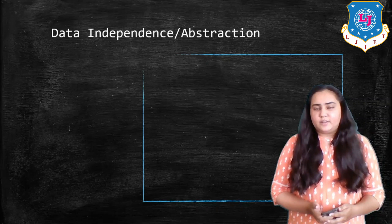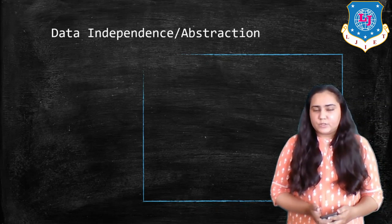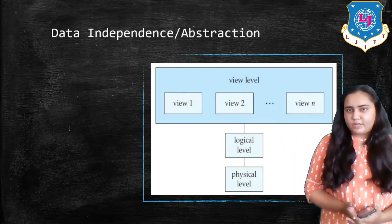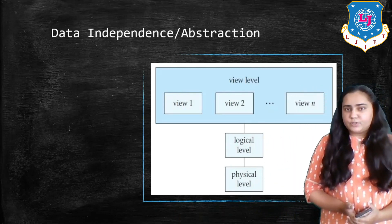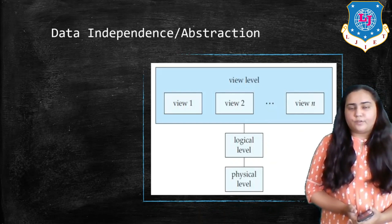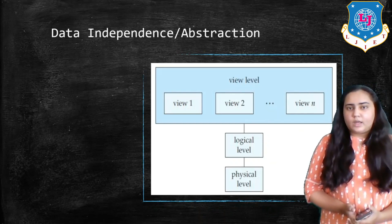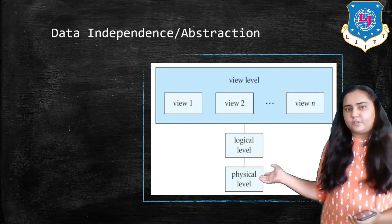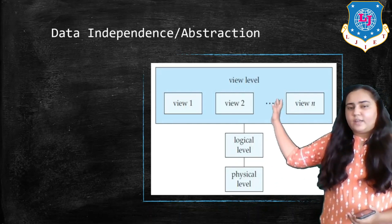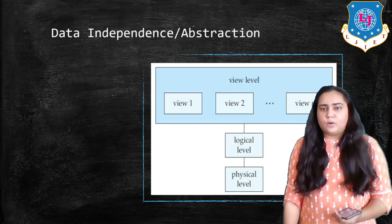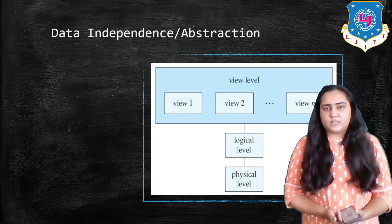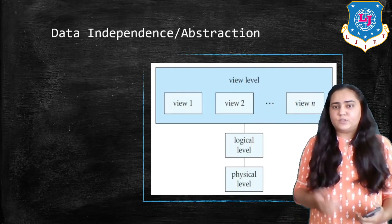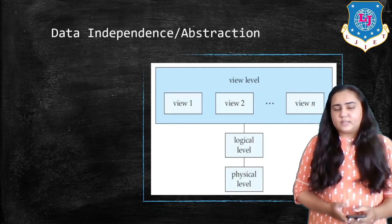Now let's talk about data independence or abstraction. The diagram you see here is a very famous diagram, also known as the three-level architecture of DBMS. You can see that there are three levels: the bottom-most level is the physical level, then there's a logical level, and the topmost is the view level. All three levels are used in a DBMS and have special significance, which we'll look at one by one.